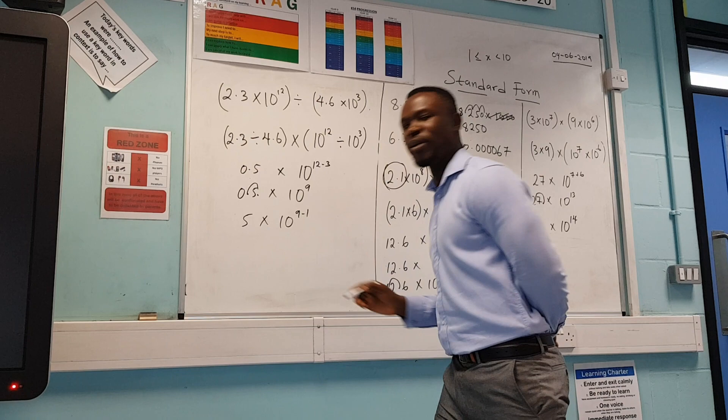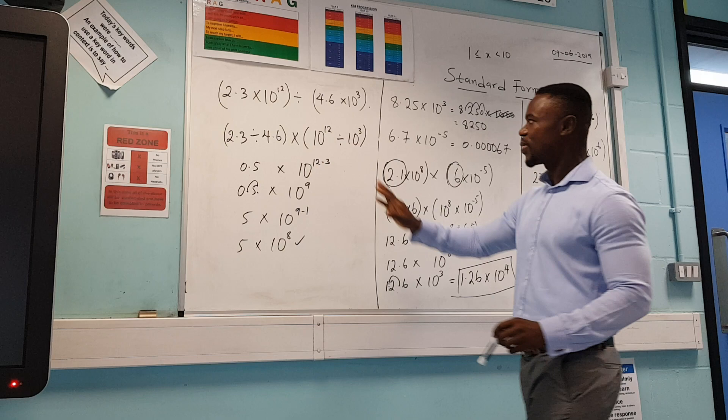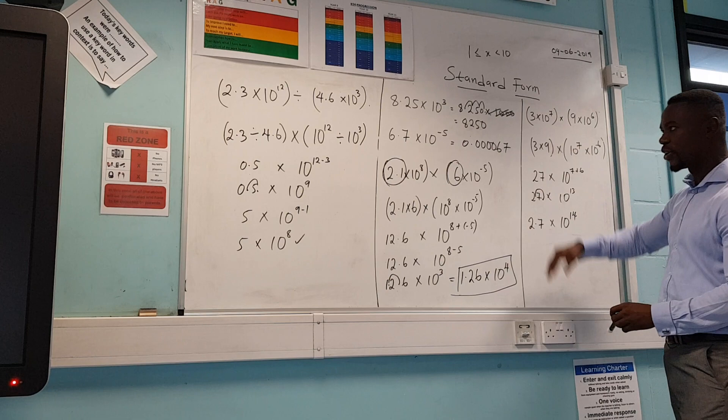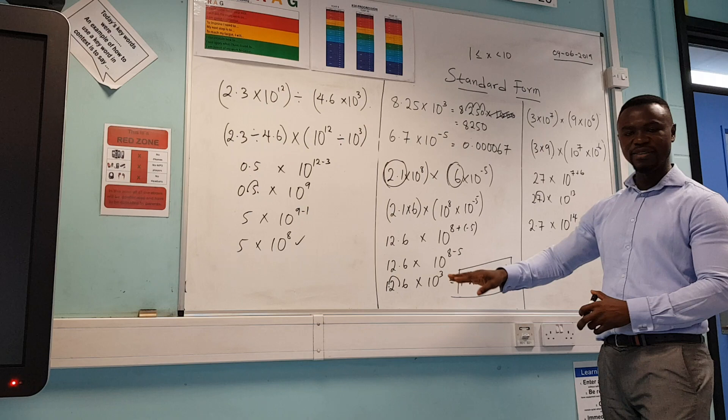I move the decimal point from left to right so the number starts with 5. Moving it once to the right means I take away 1 from the power: 9 minus 1 gives 8. So the final answer in standard form is 5 times 10 to the power of 8. Remember: when dividing, use divide for the numbers, always keep times in the middle for standard form, and adjust the power when the result isn't in standard form.